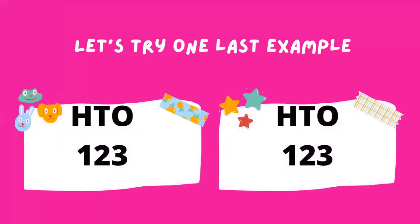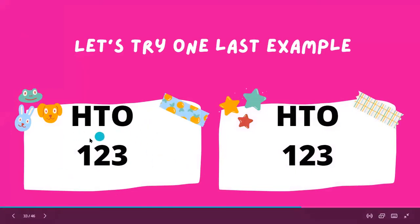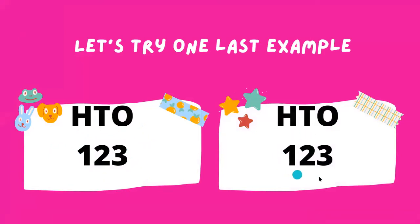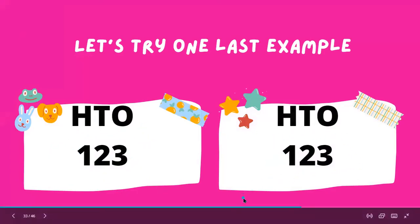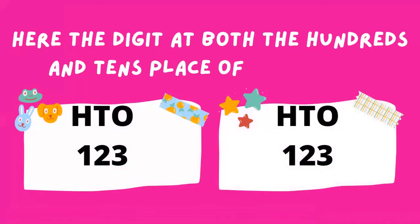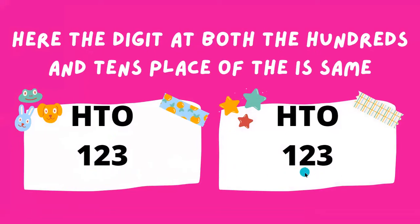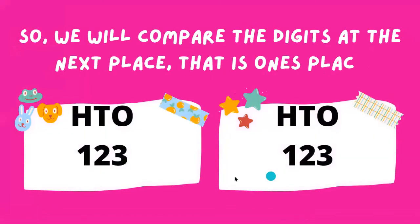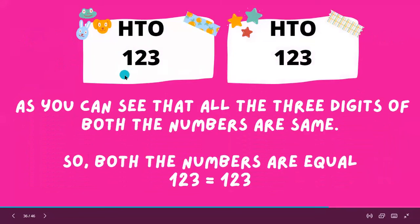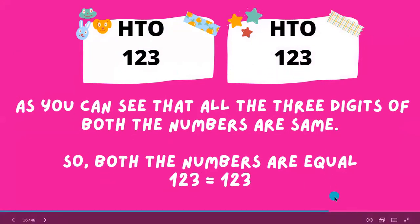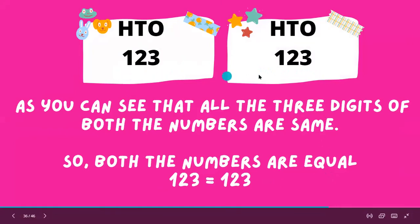Let's try one last example. Let's compare these two three-digit numbers: 123 and 123. Here the digit at both the hundreds and tens place is the same. So we will compare the digit at the next place, which is the ones place. As you can see, all three digits of both numbers are the same, so both numbers are equal. We can say 123 is equal to 123 using the equal to sign.